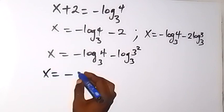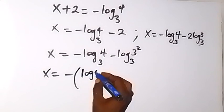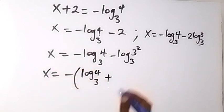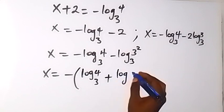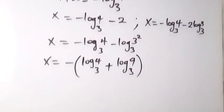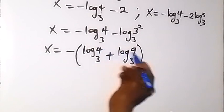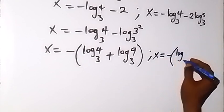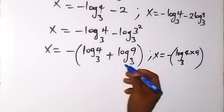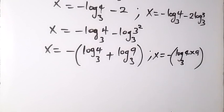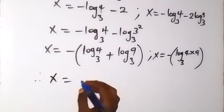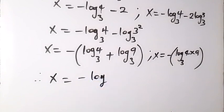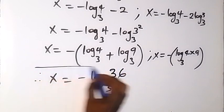Since we have plus, we can combine the logs by multiplying: x equals minus log base 3 of (4 times 9). That gives us x equals minus log base 3 of 36. So the second value of x is minus log base 3 of 36. That is the second solution for x.